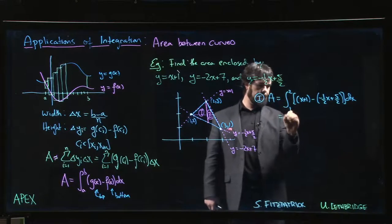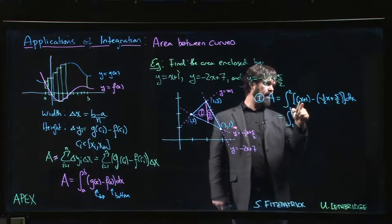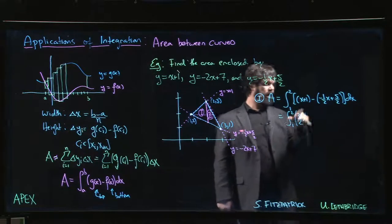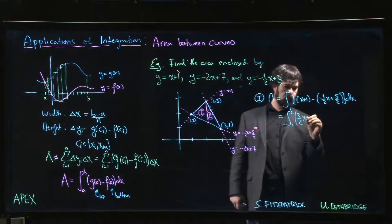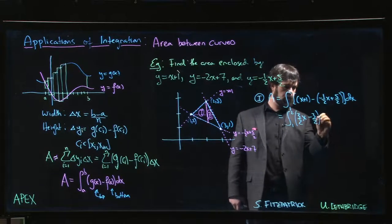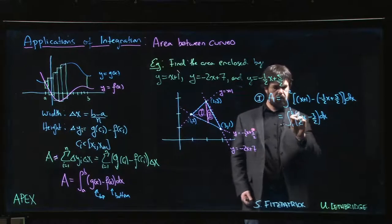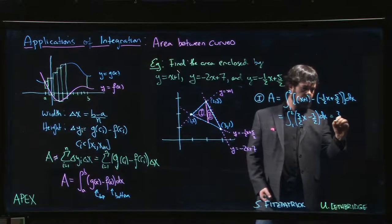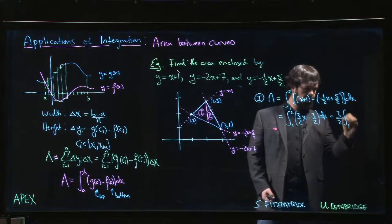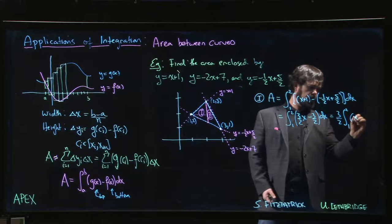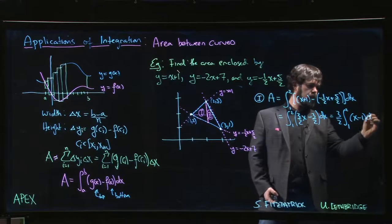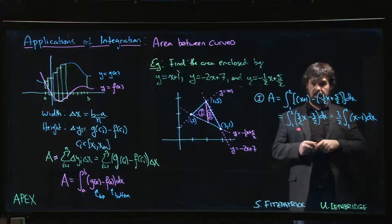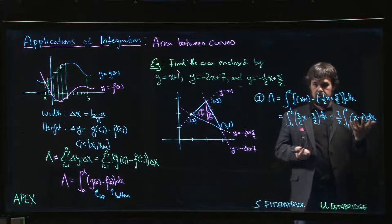And so we clean this up. We have x plus half x so we have 3 over 2 x and then we have 1 minus 5 half so minus 3 over 2. Not so bad. So in fact if you want you can factor out the 3 over 2. Integral from 1 to 2. x minus 1 dx. And depending on how clever you want to be here you could either integrate term by term x squared over 2 minus x.